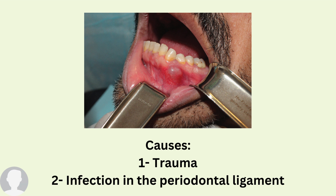What are the causes behind this type of cyst? Number one is trauma — any trauma to the teeth from childhood can, with time, develop into a large mass between the canine and premolar area. Another cause can be infection in the periodontal ligament. If there is any infection inside the periodontal ligament itself, this infection will, with time, develop into a cyst.